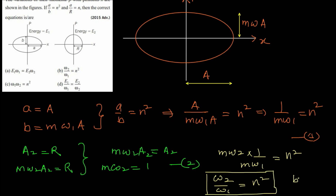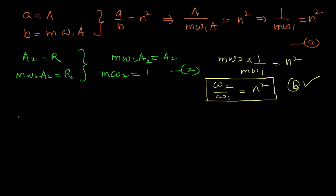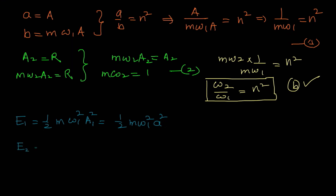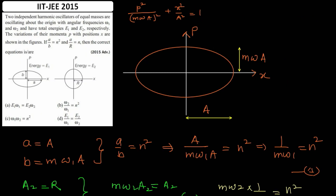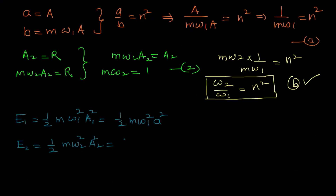Now for the energy. The energy of oscillator 1 is E₁ = ½mω₁²A², where the amplitude of oscillator 1 is A. Similarly, the energy of oscillator 2 is E₂ = ½mω₂²r², since the amplitude of oscillator 2 is r. Dividing these two expressions, we get E₁/E₂ = (ω₁²A²)/(ω₂²r²).